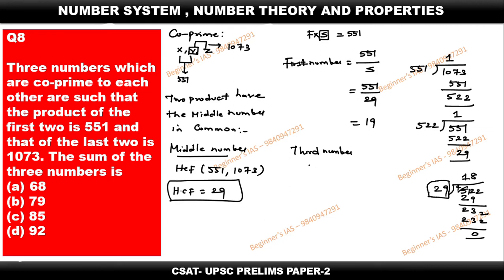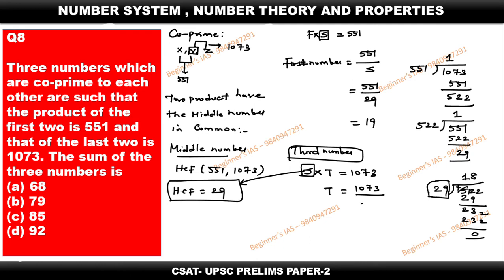To identify the third number: second number × third number = 1073. We know the second number is 29. So divide 1073 by 29, which gives 37. So we have found the first number, middle number, and the last number: 19, 29, and 37.